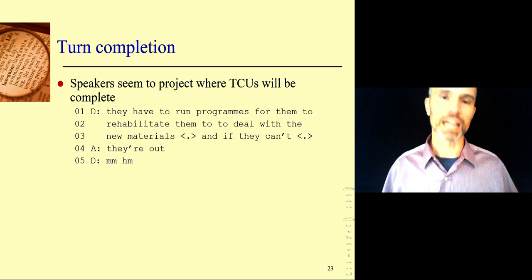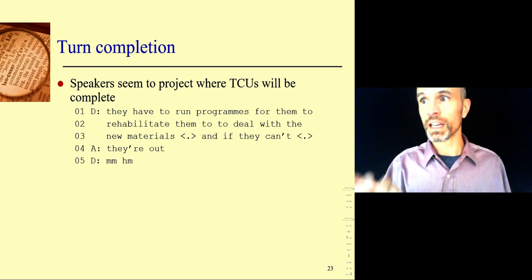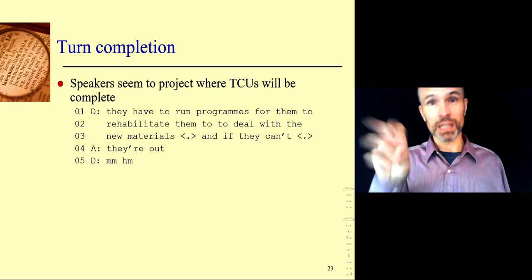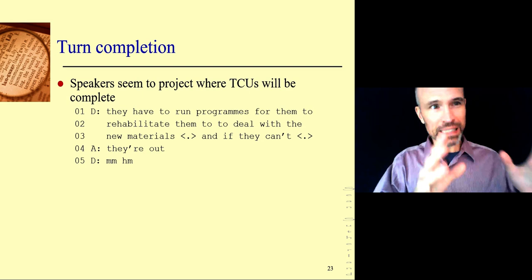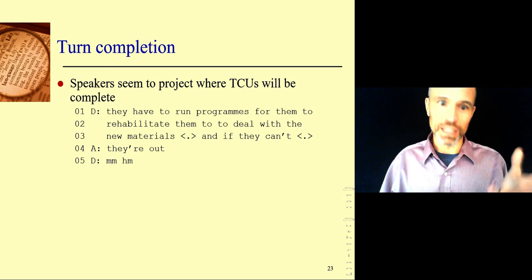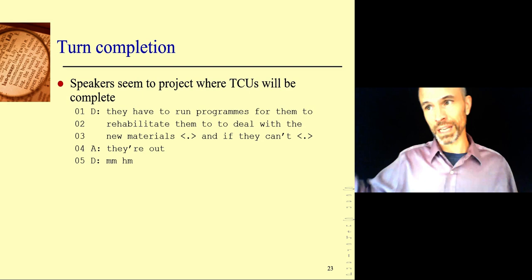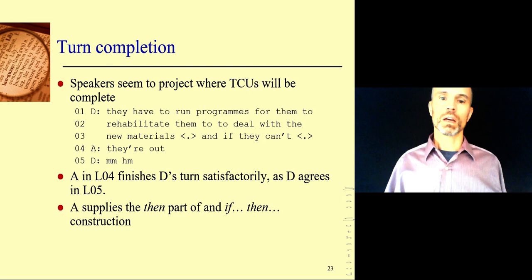D is talking: they have to run programs for them to rehabilitate them and to deal with the new materials. And if they can't — A is able to predict an ending. A says they're out. We can see from line five that D is satisfied that that's a successful completion because D says mm-hmm. Whether or not the same words matter, it's the function — A's function of providing a summary for D's turns in lines one to three. D says mm-hmm, I accept that summary. People do this all the time. You hear people say things like they get along really well — they finish each other's sentences. We can finish each other's sentences even if we don't know each other, because we're good at evaluating content and also evaluating structure.